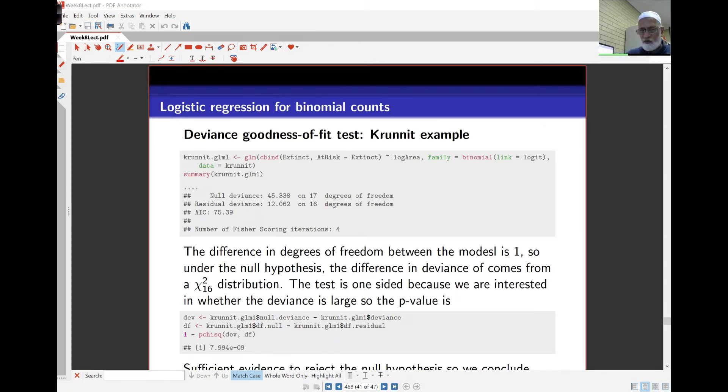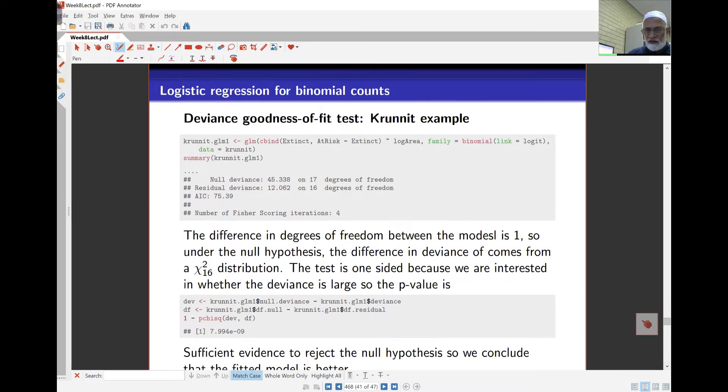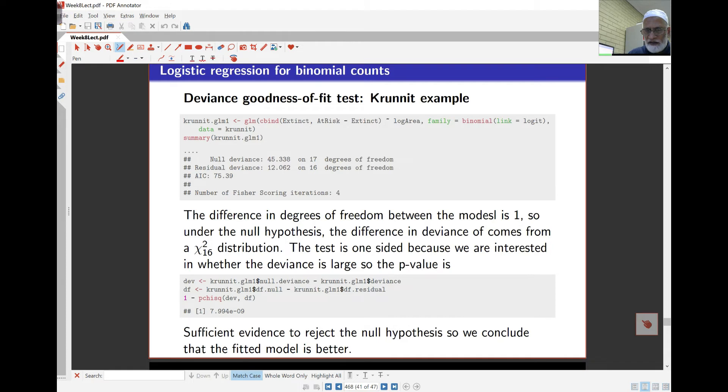So for the deviance test in this case, we can take a look at the difference in deviance, and you'll find here the null deviance and the residual deviance both given to us. So the residual deviance is going to be lower than the null deviance. You will find that the null deviance is higher than the residual deviance. The difference is about 33. And the degrees of freedom, the difference is just 1 here. This is the chi-square distribution we're looking at. The number here is about 33, so the chi-square one would look a bit like this. And 33 is about here, which means we have very strong evidence against the null hypothesis. In other words, we conclude the fitted model is better and that the area here certainly does affect the probability of extinction.